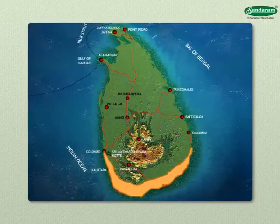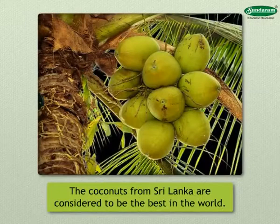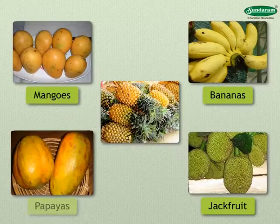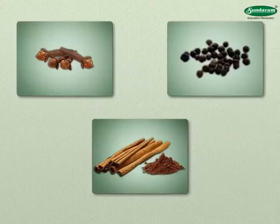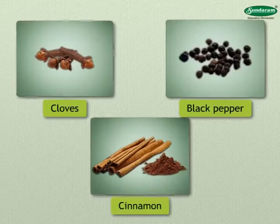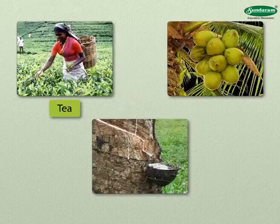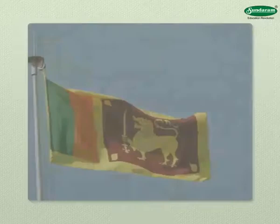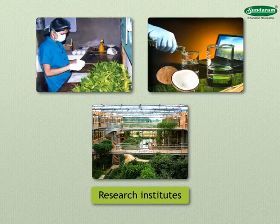The coconuts from Sri Lanka are considered to be the best in the world. In addition, mangoes, bananas, jackfruit, papayas, pineapples, etc. are also grown. Spices like cloves, black pepper, cinnamon, etc. are grown in plantations. Cultivation of tea, coconut, and rubber is undertaken commercially. The government has established many research institutes to help increase this production.